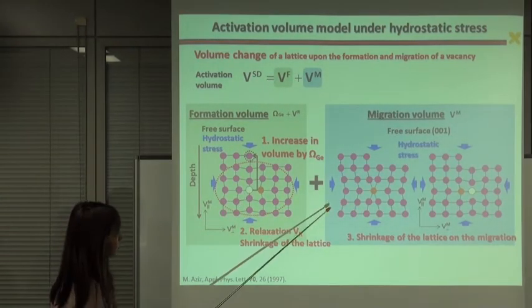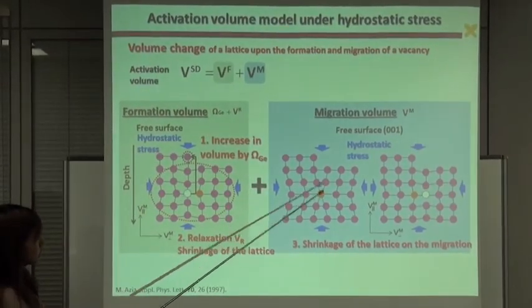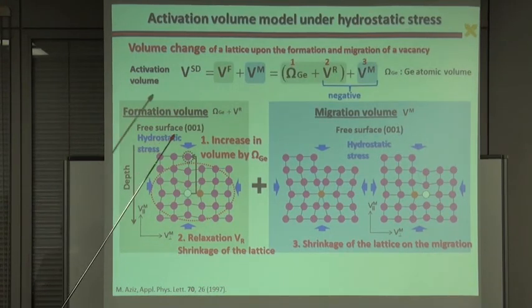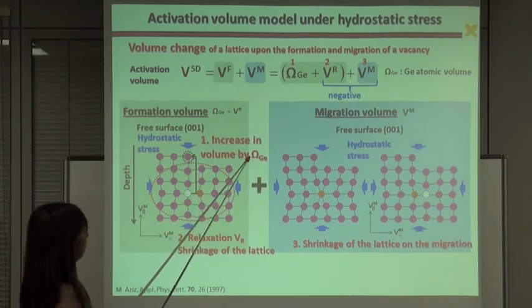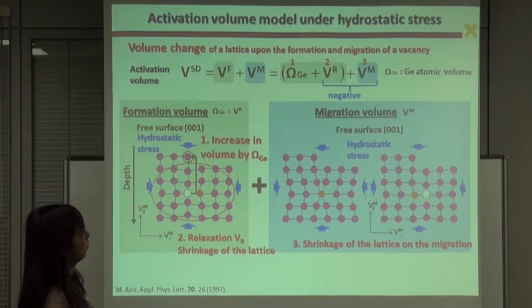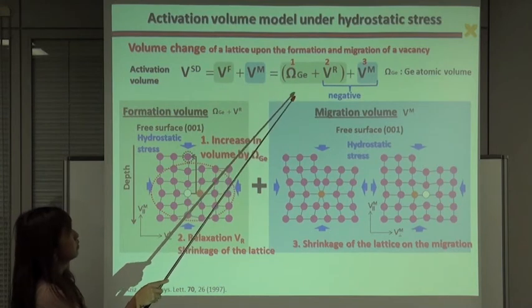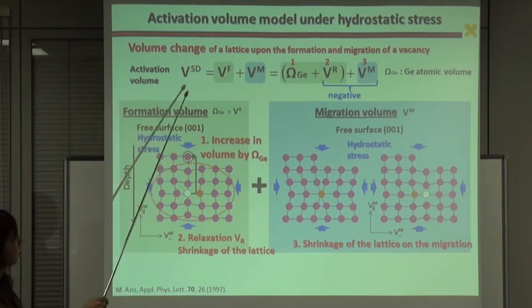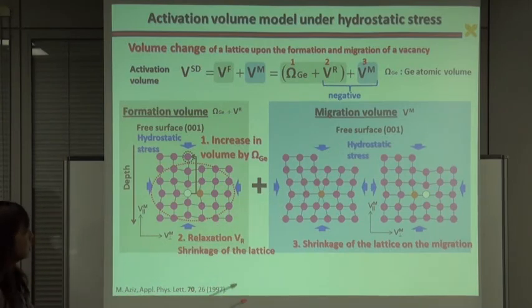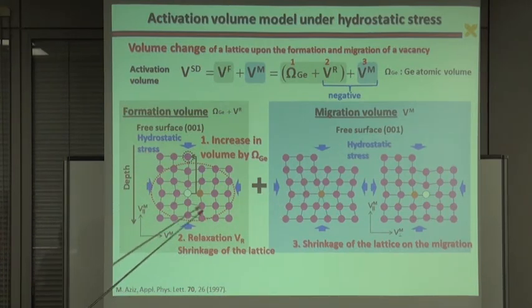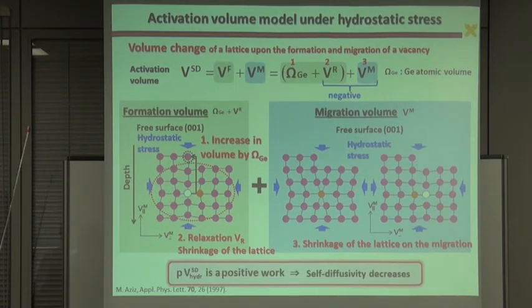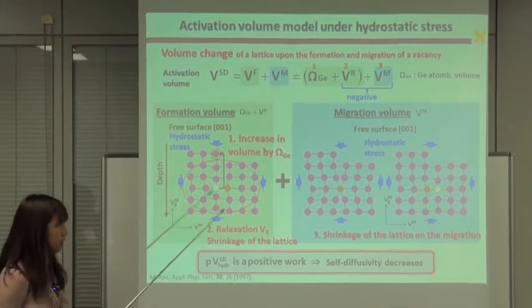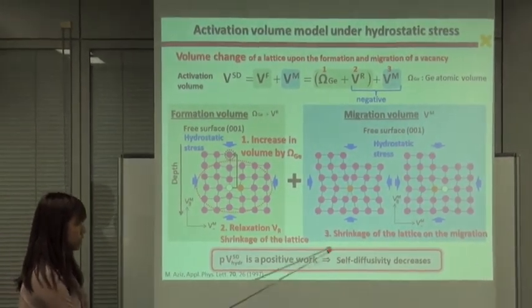When the vacancy migrates, this shrinkage of the lattice is expanding more; this is migration volume. So the activation volume becomes the sum of three components: increase, decrease, decrease of the volume. So smaller than one germanium atomic volume, because these two terms are negative volume. And this activation volume interacts with hydrostatic stress. And the lattice does positive work against the stress field. As a result, activation enthalpy increases because this is positive work, and then self-diffusivity decreases.